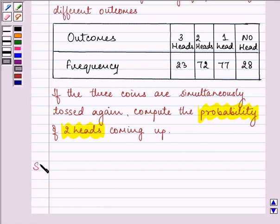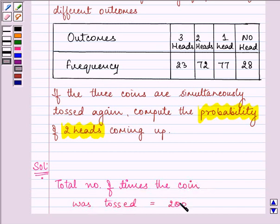Let us proceed on with our solution. Here the total number of times the coin was tossed is equal to 200.